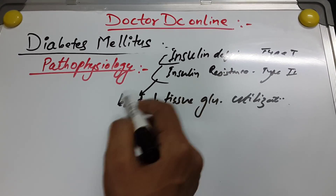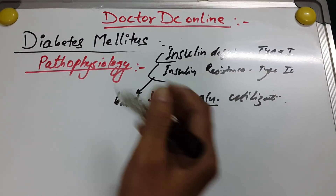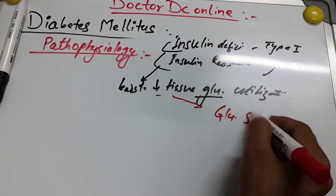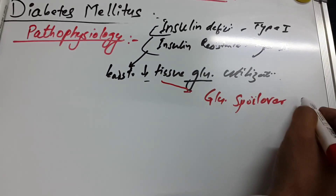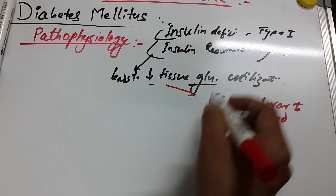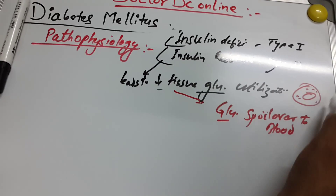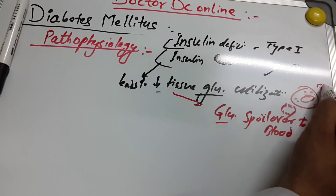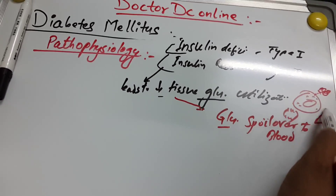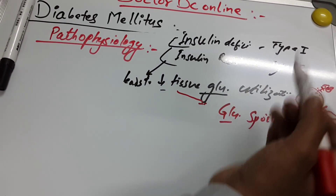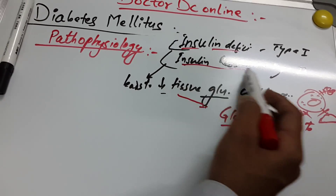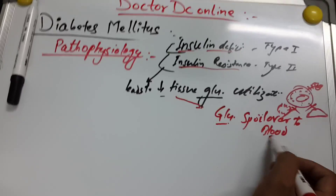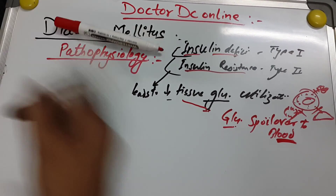Due to decreased tissue glucose utilization, glucose spills over into the blood. All the glucose in circulation cannot go to the liver, muscles, or adipose tissue. These glucose molecules are unable to move due to lack of insulin — either deficiency or resistance — so blood glucose spills over into the circulation.